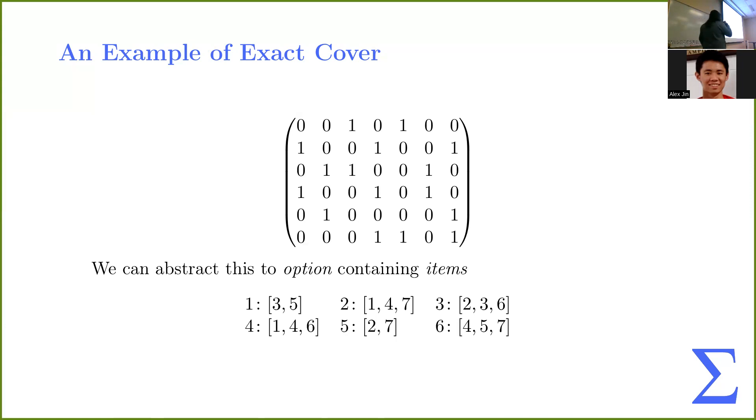So, for example, you cannot choose both rows three and four, because in the second-to-last column, they both have a one. So, that's a forbidden choice. Then you have two ones in that column. And we can abstract this into some different notation for options which contain items. So, we can see row one, or option one, has a one in the third and the fifth column. Row two has three items, a one in the first column, a one in the fourth column, and a one in the seventh column, et cetera.